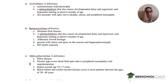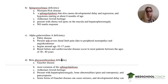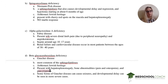Beta-glucocerebrosidase deficiency is Gaucher disease — the most common of the sphingolipidoses. It's also associated with Ashkenazi Jewish heritage and presents with hepatosplenomegaly, bone abnormalities — you see pain, osteopenia — and pancytopenia in a child. Some of these diseases can also cause seizures and developmental delay. However, our patient does not present with any of these findings.